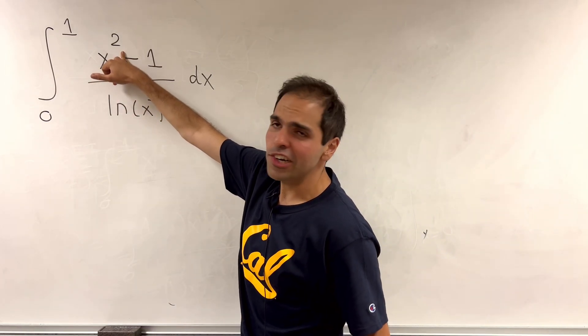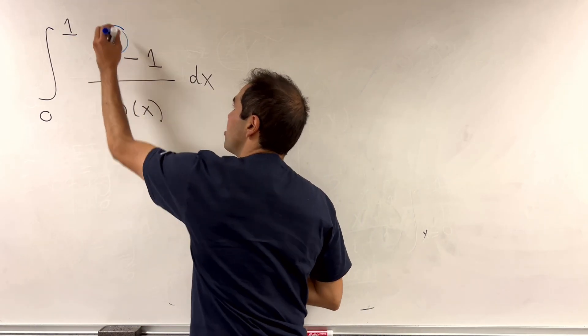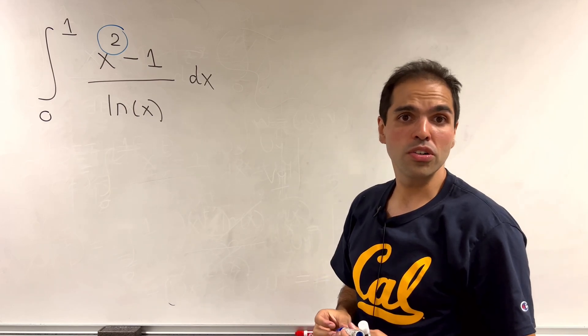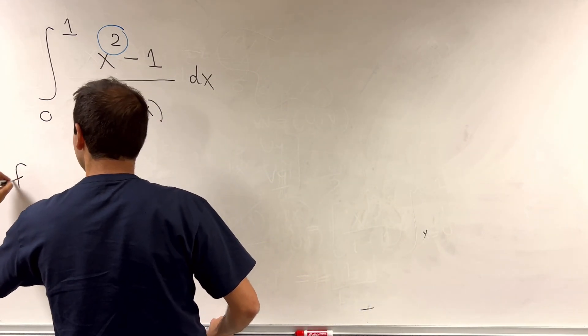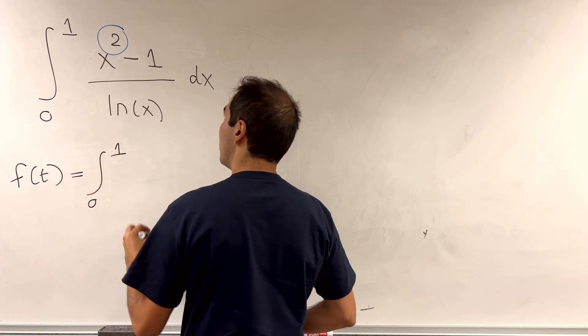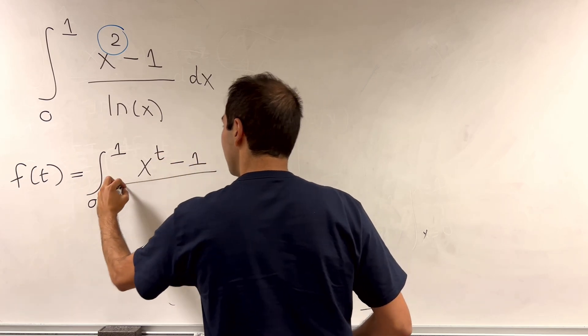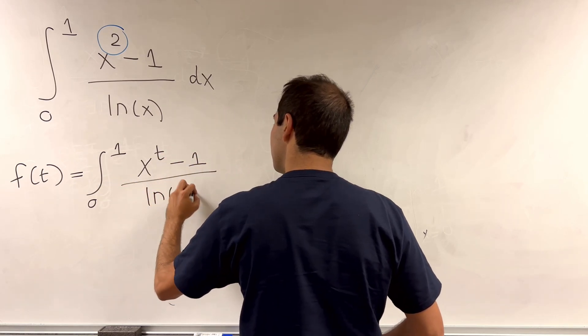Because here, instead of considering 2 in this x squared minus 1, let's just consider t. So let f of t be the integral from 0 to 1 of x to the t minus 1 over ln of x dx.